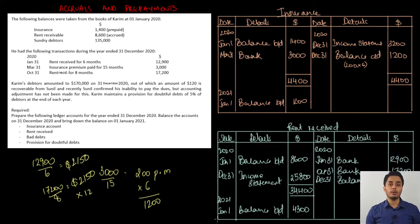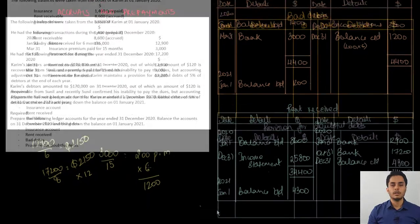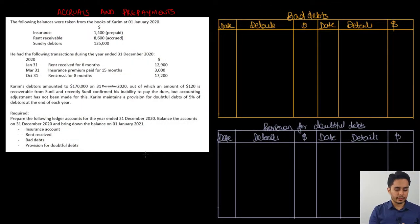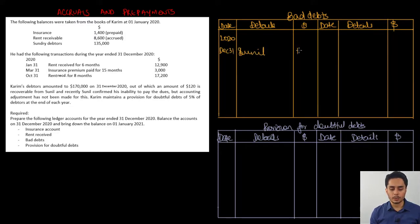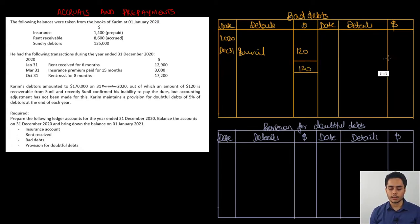Now let's prepare the bad debts account and the provision for doubtful debts account. The bad debts transaction from the question is writing off Sunil's amount from his account. The bad debts entry is: bad debts debit, Sunil credit. On the debit side, the transaction on 31st December is: Sunil, $120. At the end of the year, all incomes and expenses are transferred to the income statement. So taking a total of the bad debts account — $120 — the entire amount is transferred to the income statement as an expense for the year. That completes the bad debts account.